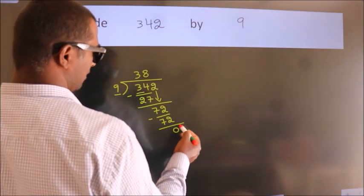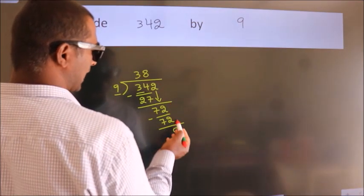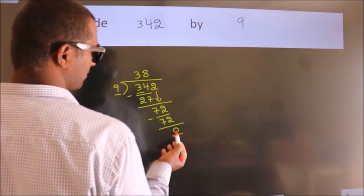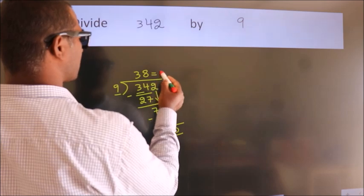After this, no more numbers to bring down. We got remainder 0, so this is our quotient.